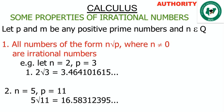And looking closely, we also discover it is not repeating in blocks. So any number of the form n root p, where n is a rational number and p is a prime number, is called an irrational number.